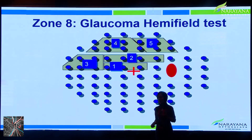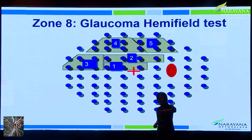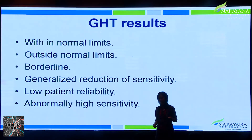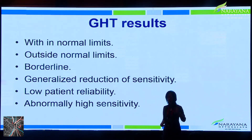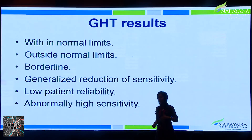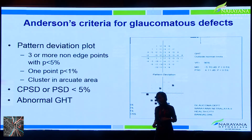Zone 8 is the Glaucoma Hemifield Test (GHT), which compares the upper field with the lower field and gives outcomes in plain English: normal, borderline, outside normal limits, generalized reduction of sensitivity, or unreliable — giving you an overall idea of the field.